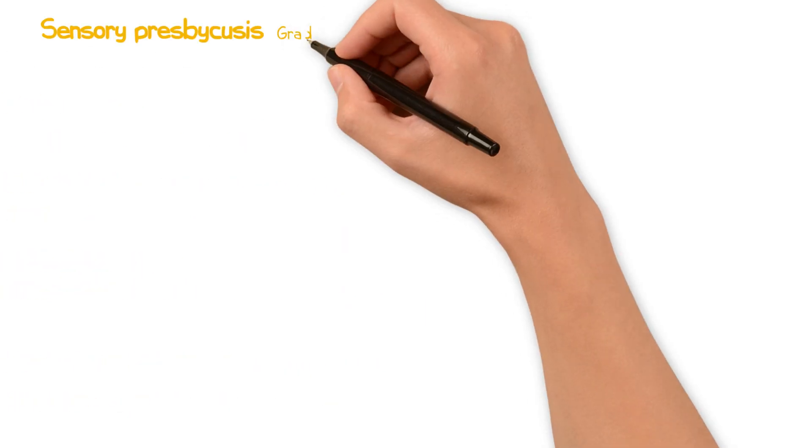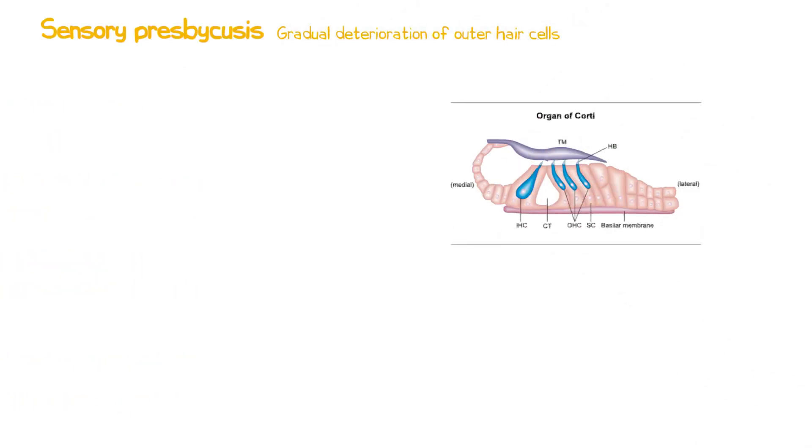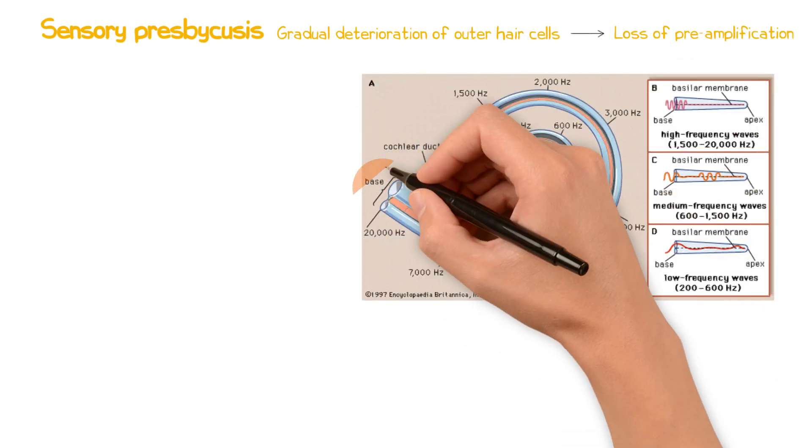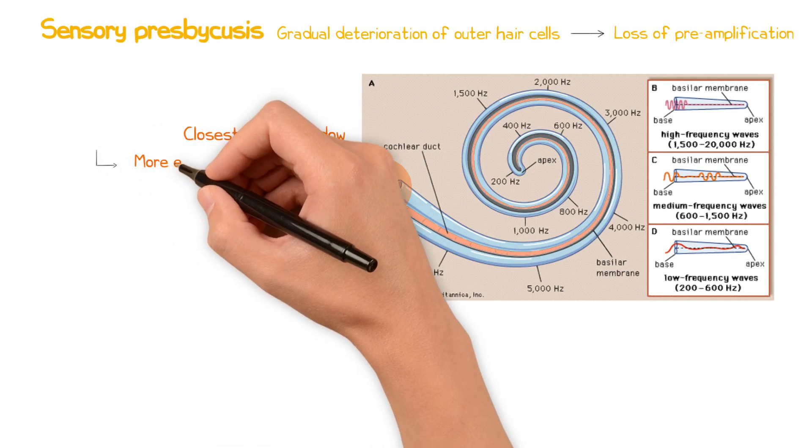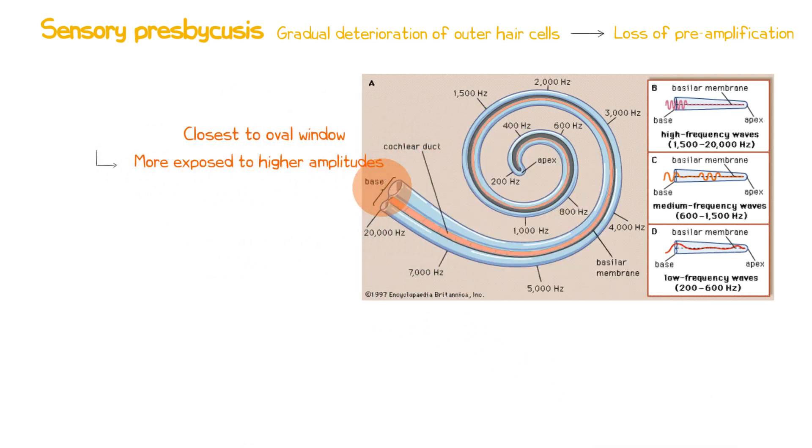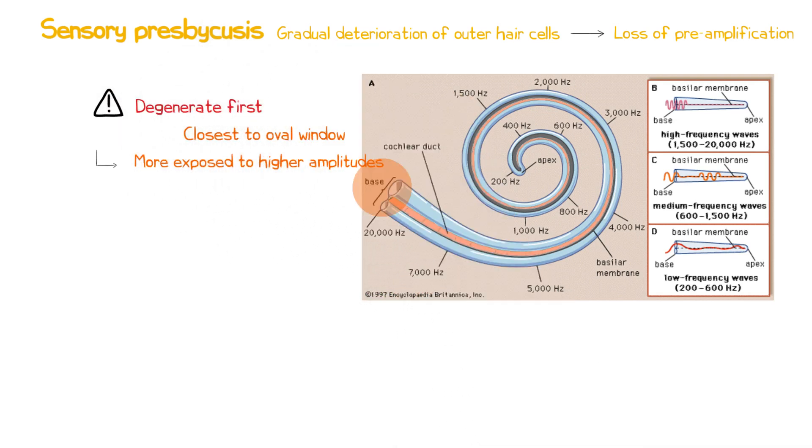With sensory presbyacusis, predominantly the outer hair cells are degenerated over time. This results in loss of the pre-amplification function, making it more difficult for the inner hair cells to detect vibrations. The hair cells in the basal turn of the cochlea are closest to the oval window and so are more exposed to higher amplitude sounds than cells at the middle and apical turns. As such, these tend to degenerate sooner, resulting in a high frequency loss.